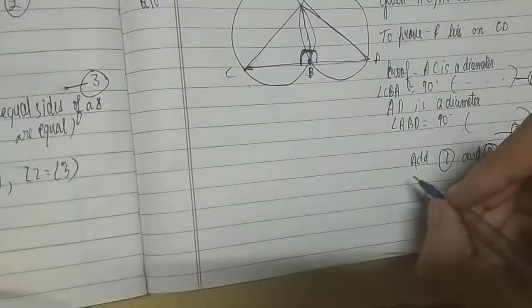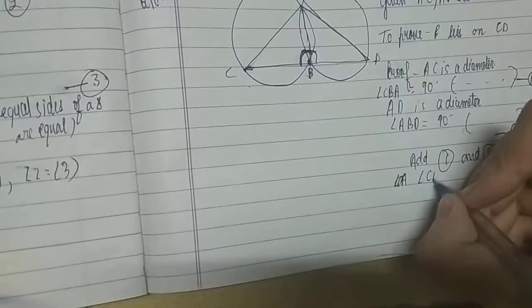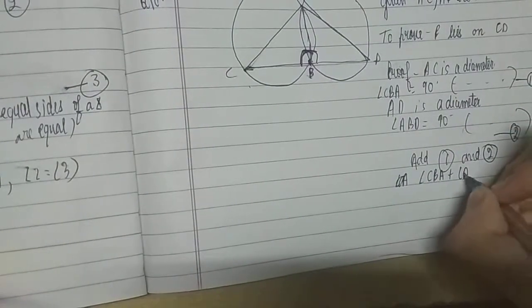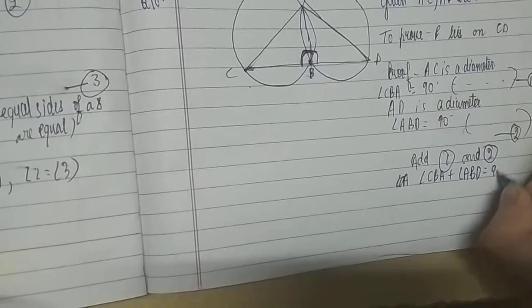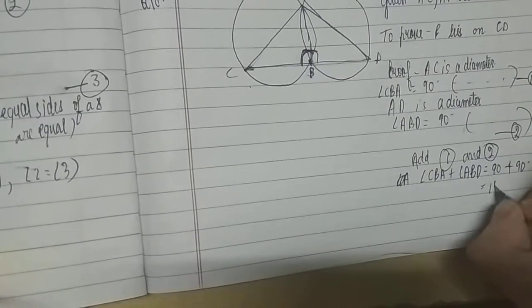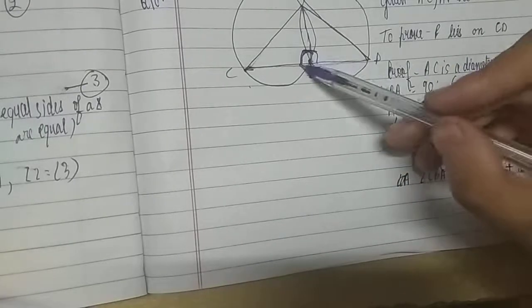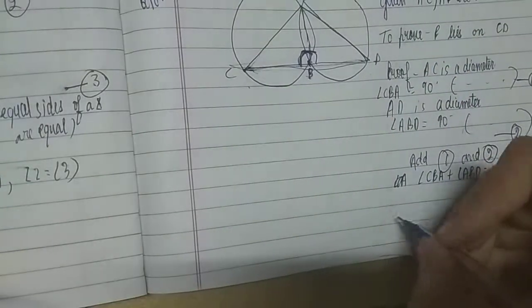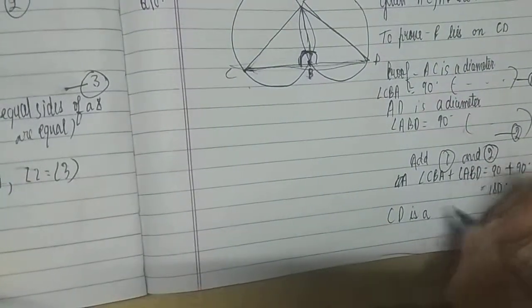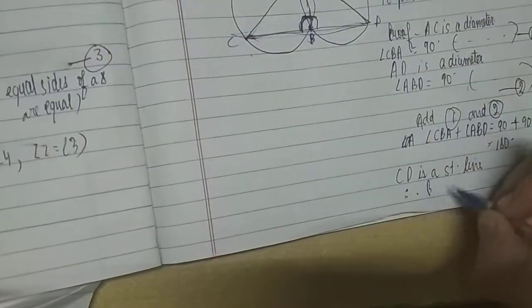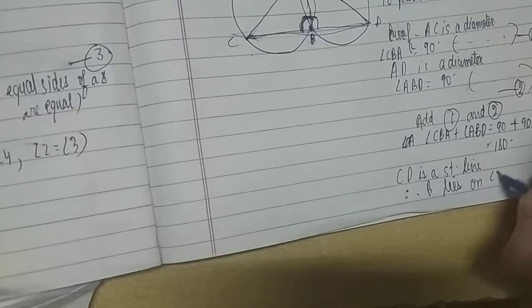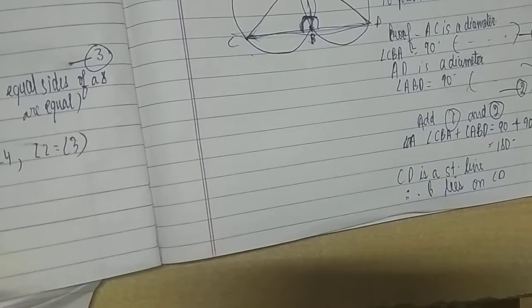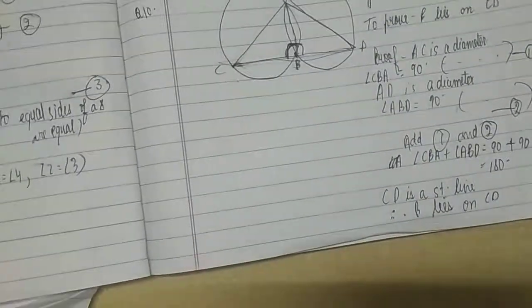Adding equation one and two, we get angle CBA plus angle ABD equals 90 degrees plus 90 degrees, which is equal to 180 degrees. If the angles make a total of 180 degrees, it means the line is a straight line. Therefore CD is a straight line, and B lies on CD. I hope you understood the solution — see you in the next video, bye bye.